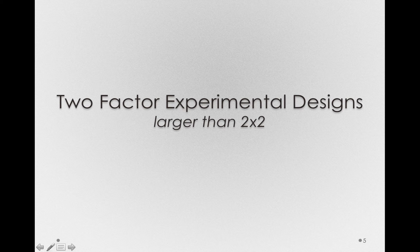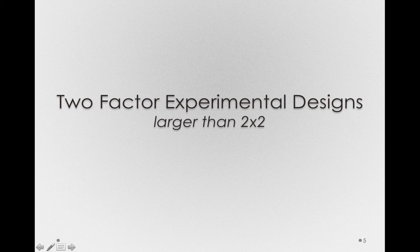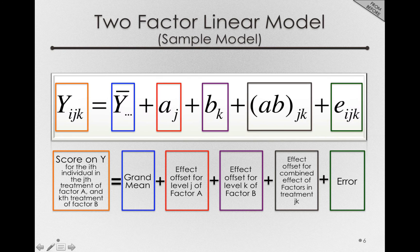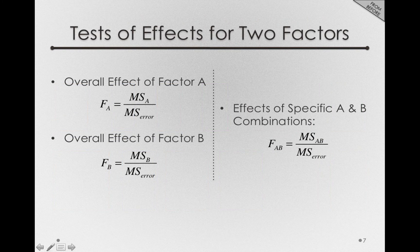So far, we've only looked at an example when we have a 2x2 design — a two-factor experimental design when we only had two levels of each factor. Let's try another situation when we have more than two levels for each of our experimental factors. It turns out we'll use the identical two-factor linear model. We'll just have more a sub j's, b sub k's, and ab sub jk's in our model, but in essence our model will be working the same way.